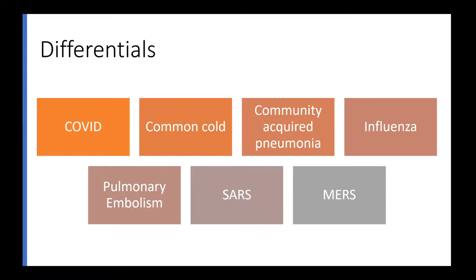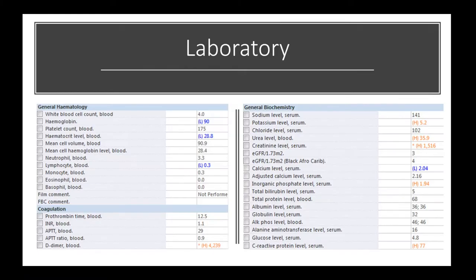Temperature is less likely in PE, but they could also have a fever. Further down the list are SARS and MERS, which are both uncommon, and he also didn't have a travel history. In terms of his admission blood tests, he was anaemic with normocytic anaemia, and lymphopenic. D-dimer was raised, potassium and creatinine were raised, phosphate was raised, and CRP was raised as well.